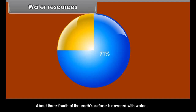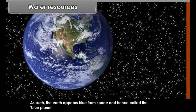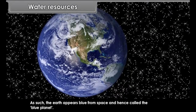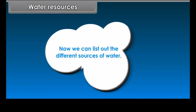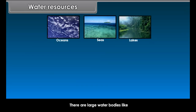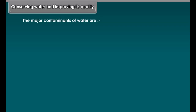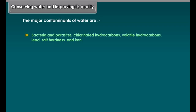Water Resources. Water is essential for all forms of life. About three-fourths (71%) of the earth's surface is covered with water, which is why the earth appears blue from space and is called the blue planet. The different sources of water include large water bodies like oceans, seas, lakes, streams, rivers, freshwater, groundwater, etc.